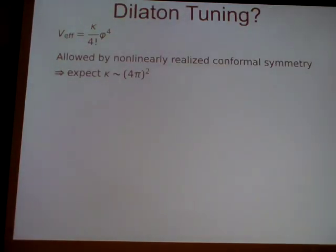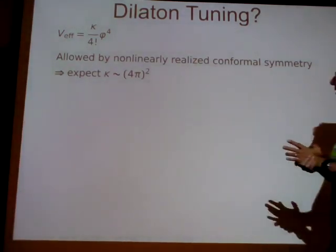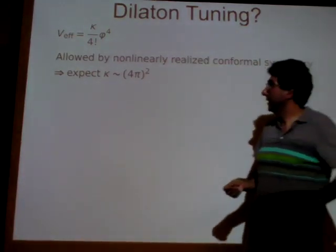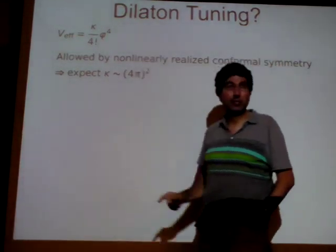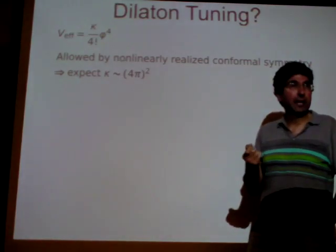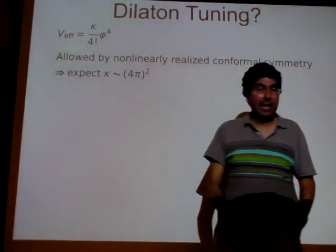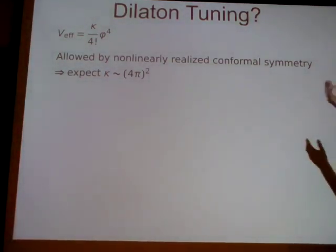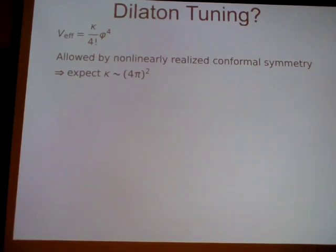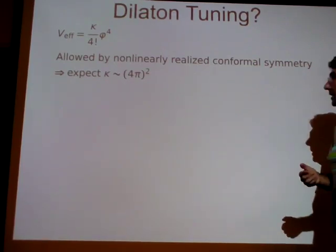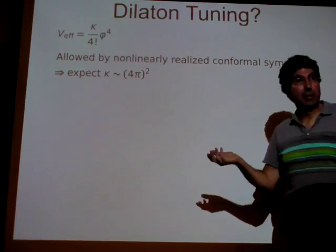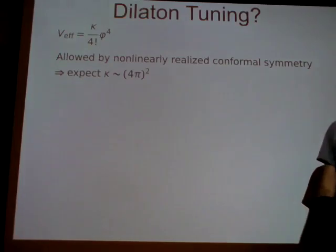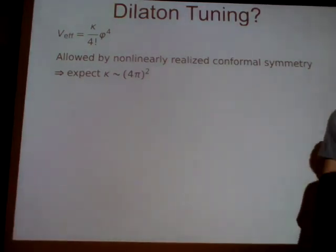The problem with dilaton tuning has to do with the fact that, unlike ordinary Goldstone bosons, the dilaton is allowed to have a potential if it's exactly quartic. The coefficient κ of this quartic is dimensionless — a quartic coupling of a scalar is dimensionless and so is allowed by scale symmetry. Because it's allowed by scale symmetry, it should be unsuppressed — something like 4π² in a strongly interacting theory.